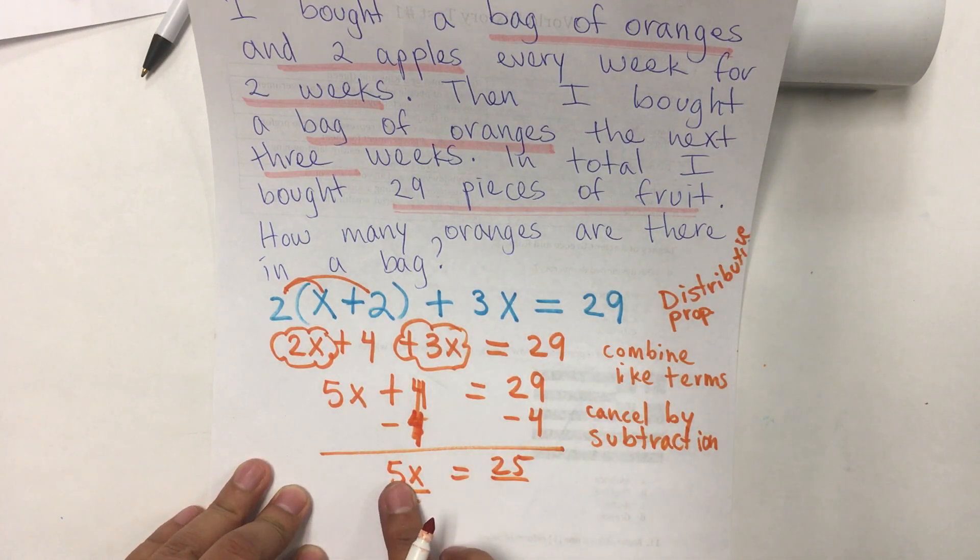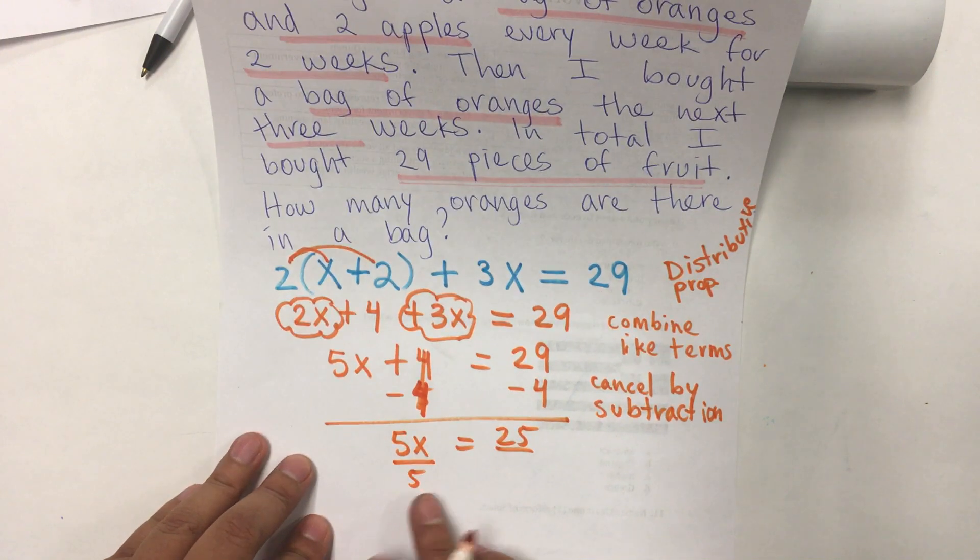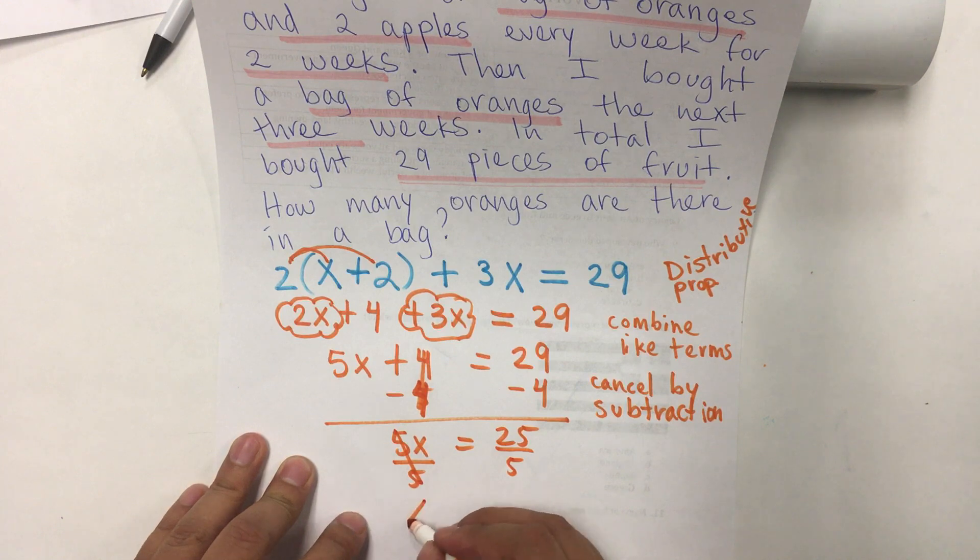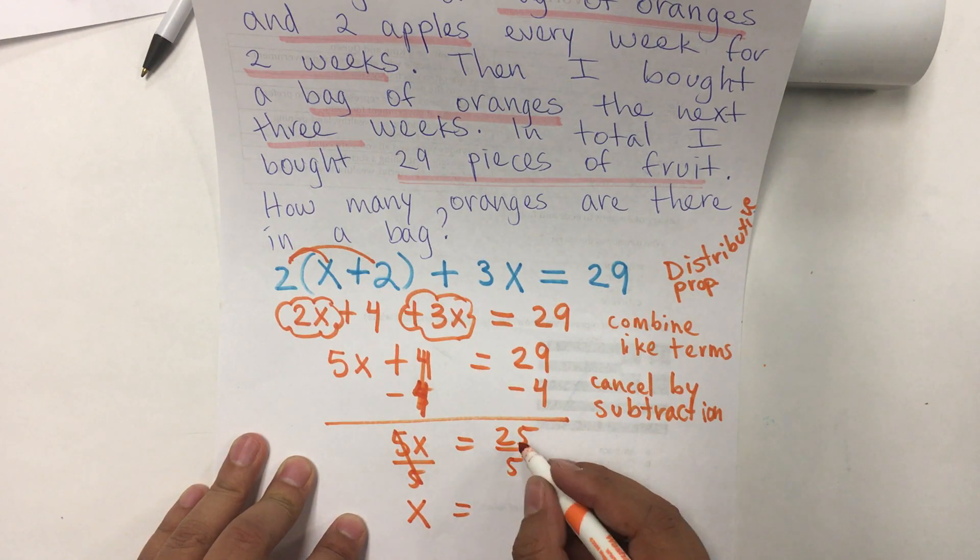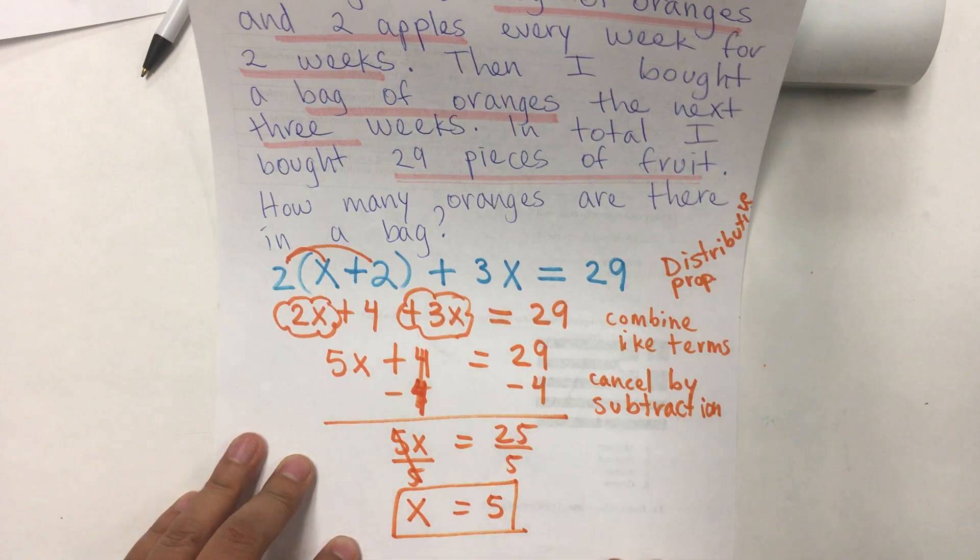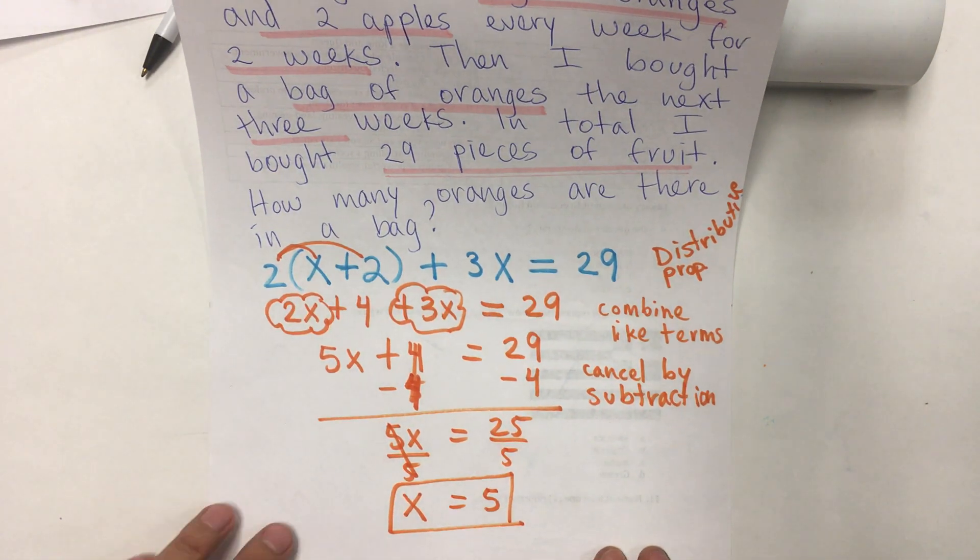Finally, if we're multiplying, the opposite of multiplication is division. So, we divide by 5 and that equals 1, but we don't put it. 1x equals 25 divided by 5 is 5.